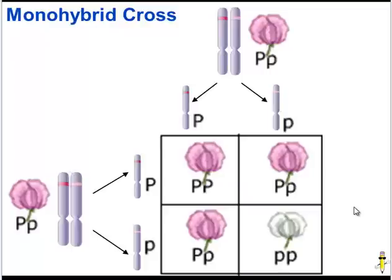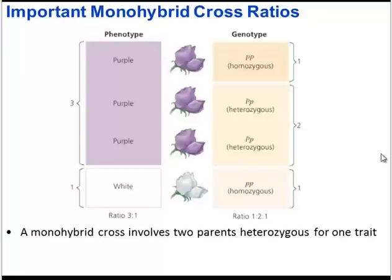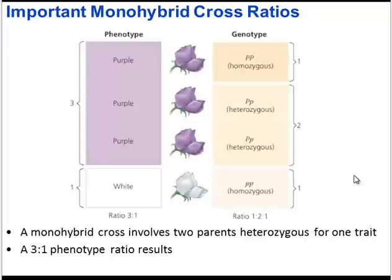There are important ratios to note from this monohybrid cross. The phenotype ratio is three to one — dominant to recessive traits. This is statistical, so the larger your sample size, the better your results. In terms of genotype, crossing two monohybrids gives one homozygous dominant genotype, two heterozygous genotypes, and one homozygous recessive genotype — a one-to-two-to-one ratio. It's important to distinguish whether you're talking about phenotype (three to one) or genotype (one-to-two-to-one).